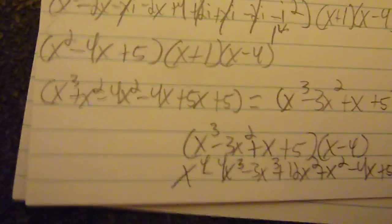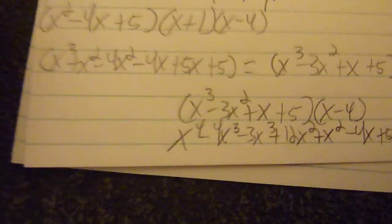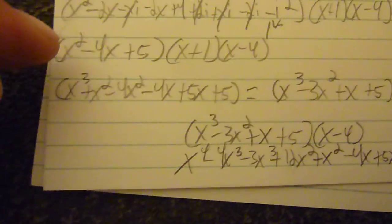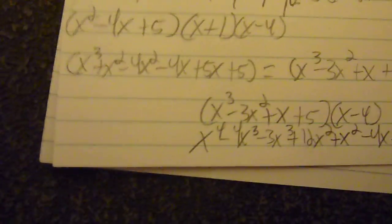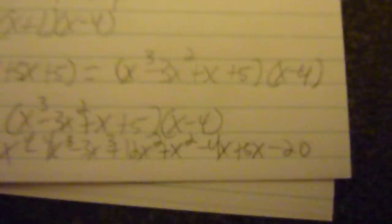You bring your other two factors down, x plus 1, x minus 4. And then you go ahead, you just do the same steps over. You're going to FOIL those next two out. End up with x cubed minus 3x squared plus x plus 5. And then you're left with x minus 4 as your other factor.